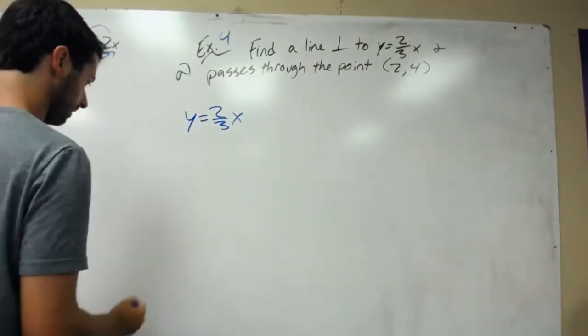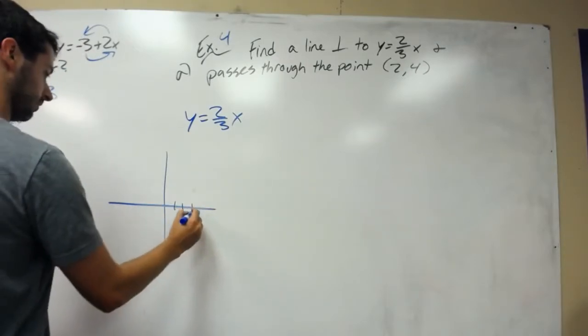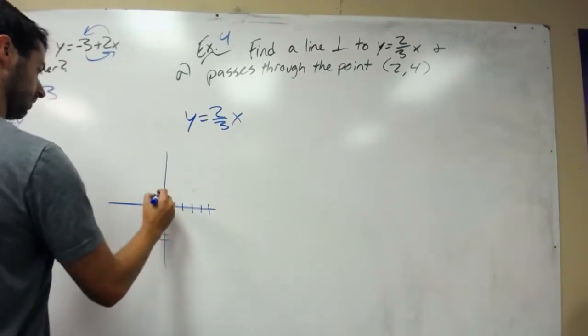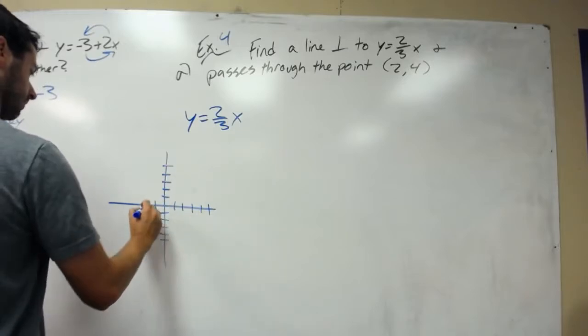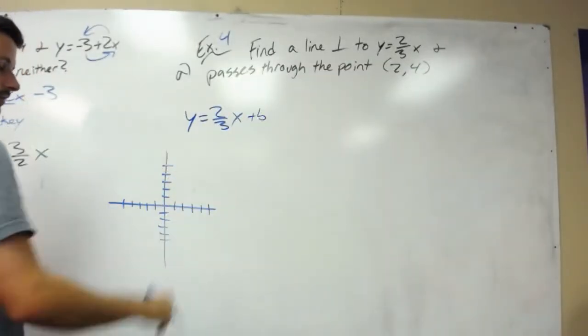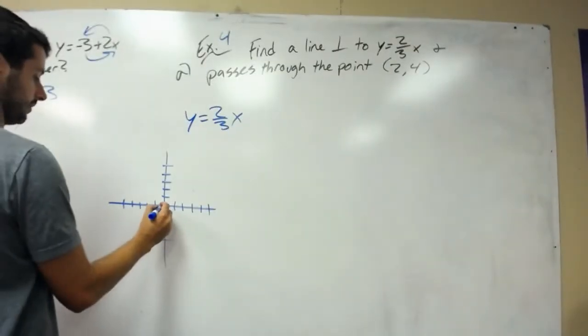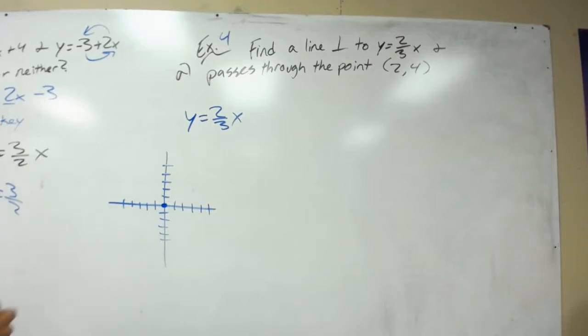First, I'm going to graph this to help you see it better. Here, we don't have a b, right? Since there's no b, that means our y-intercept is at the origin. We just don't write plus 0, that's implied.